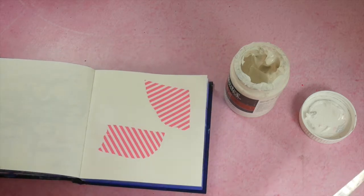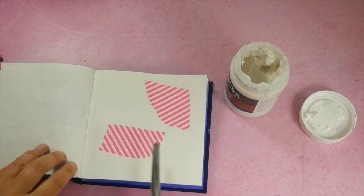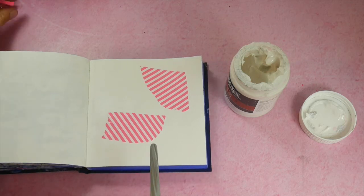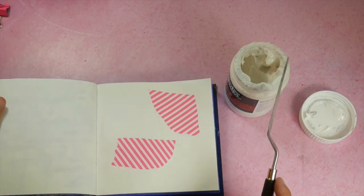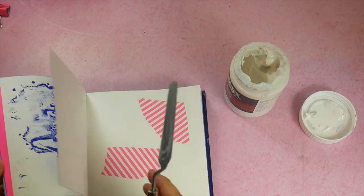So this is how I apply a collage element on an original page with a palette knife using the matte gel medium.